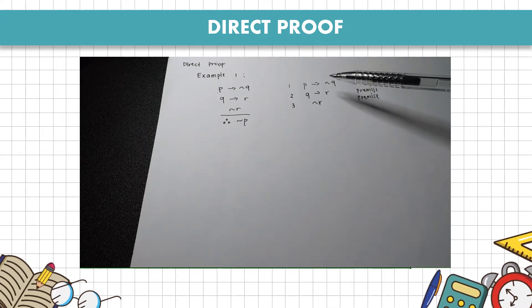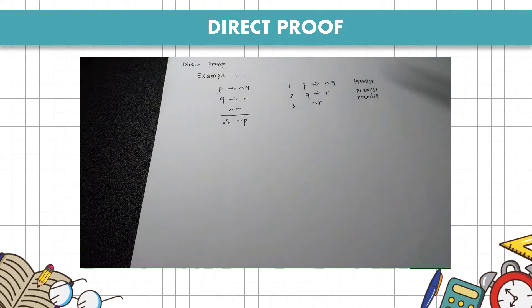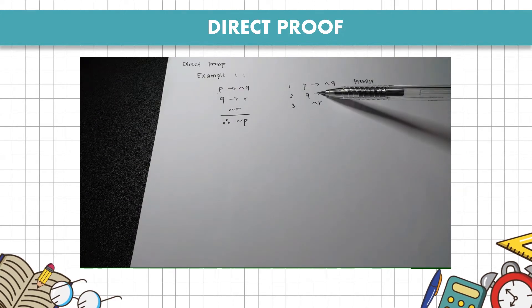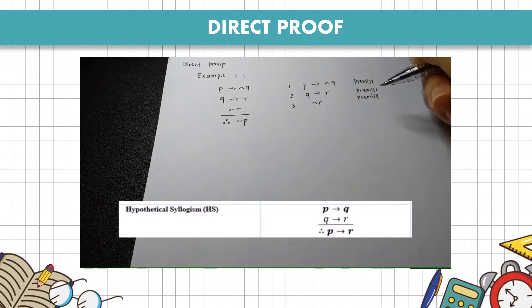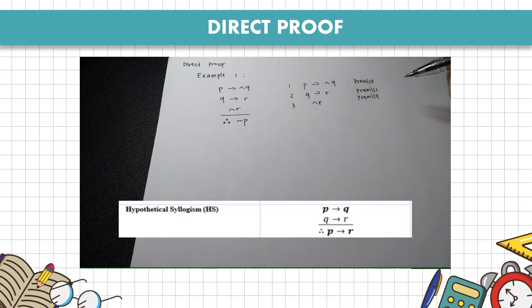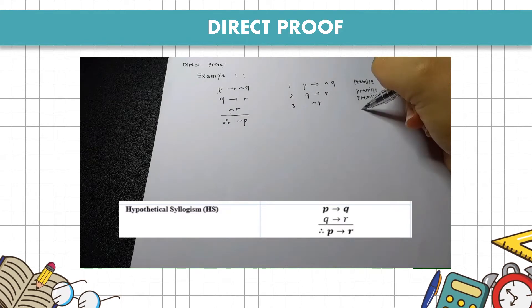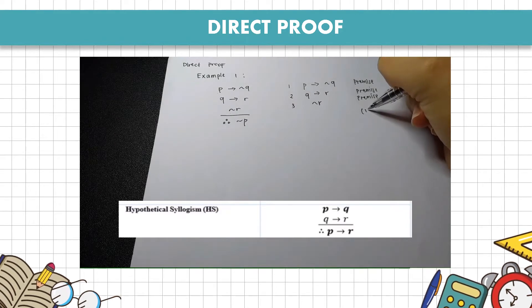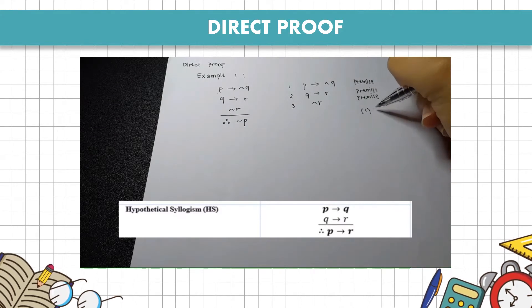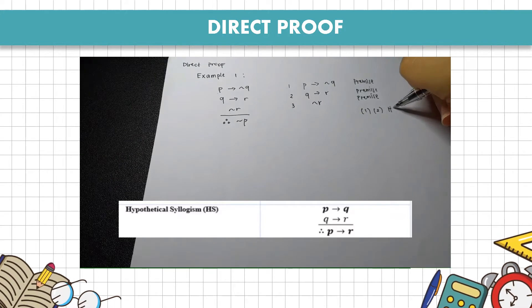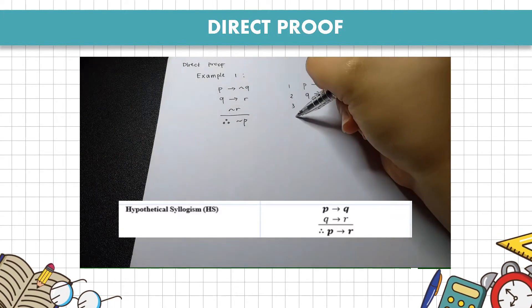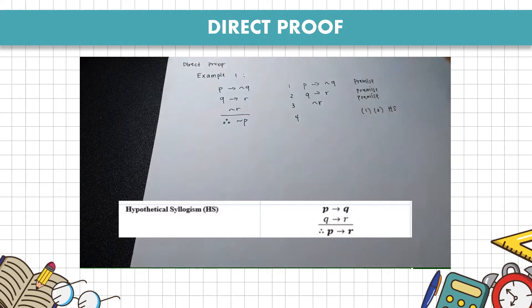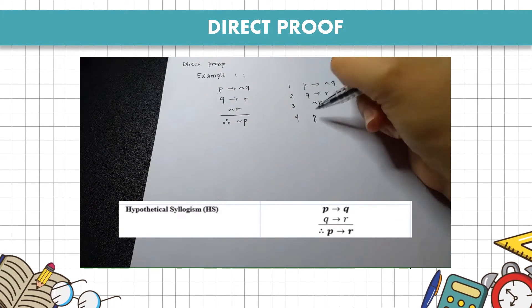We notice that premises 1 and 2 resemble hypothetical syllogism (HS). So we write '1, 2 HS', and the result we get is P implies R.